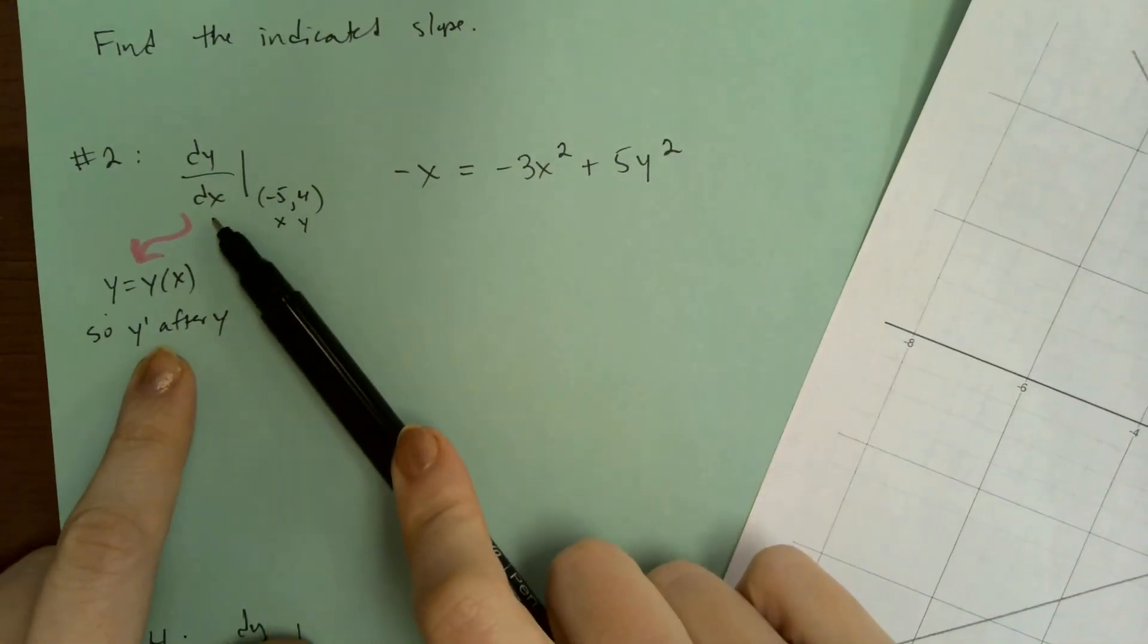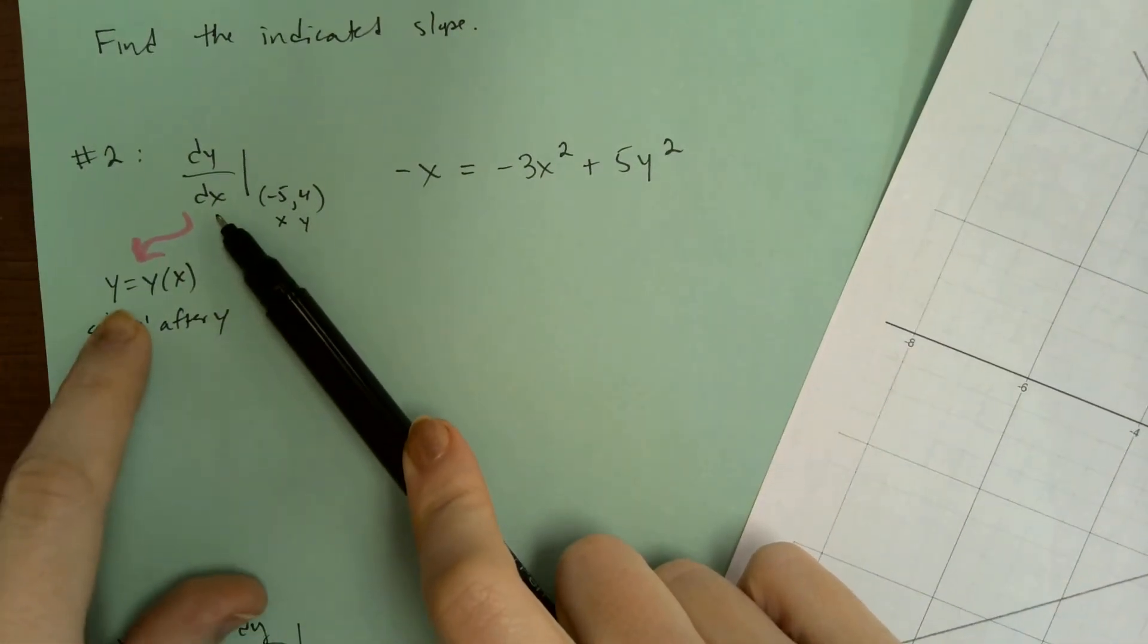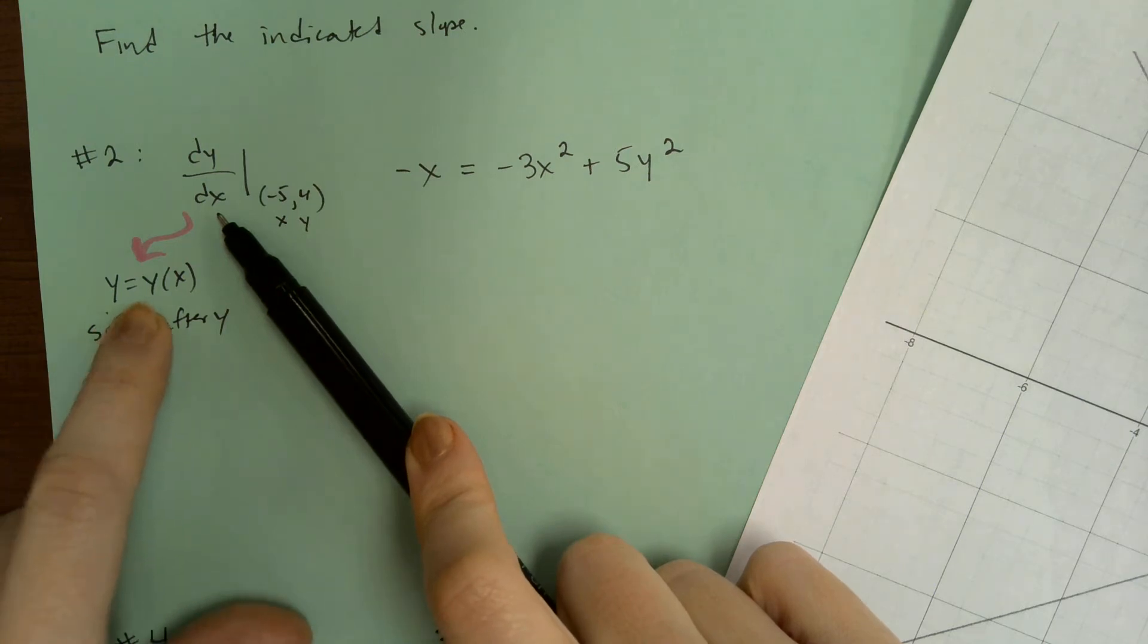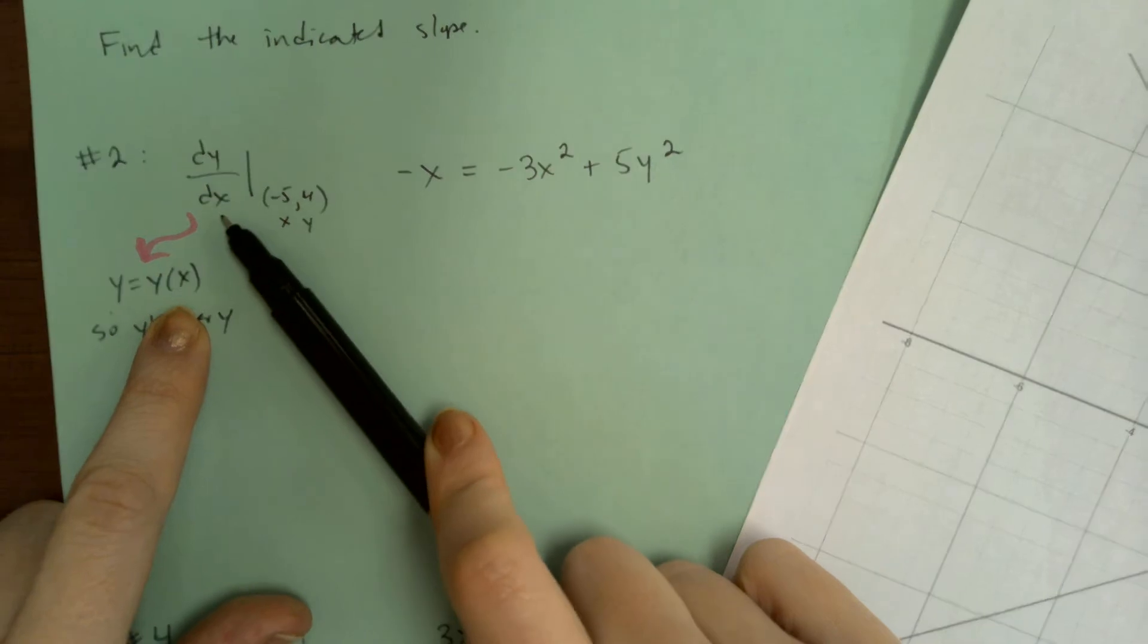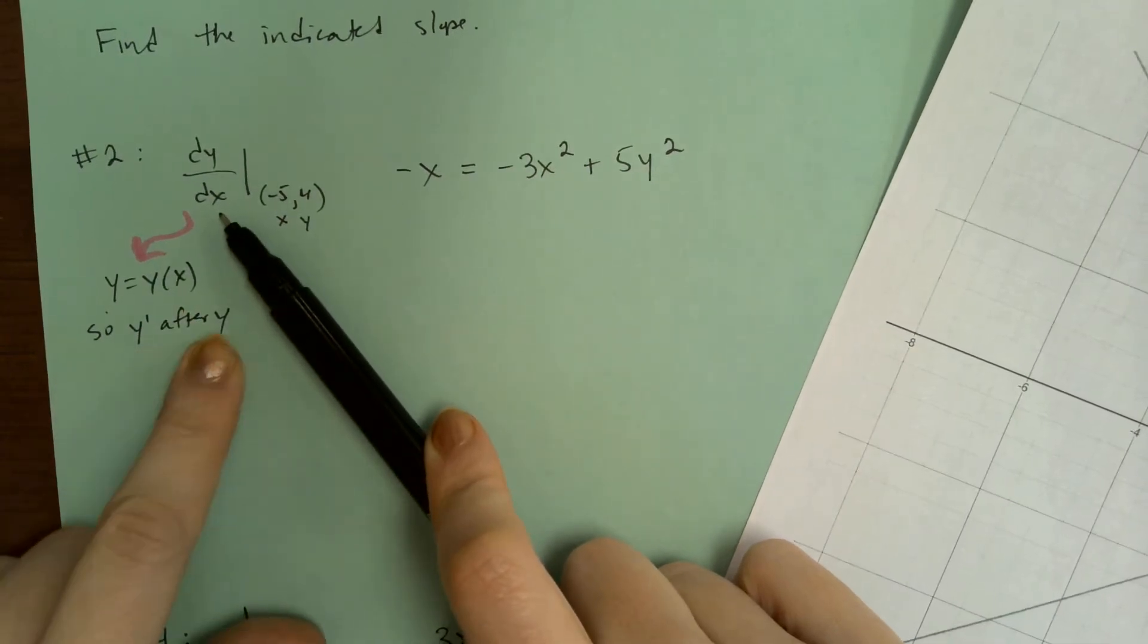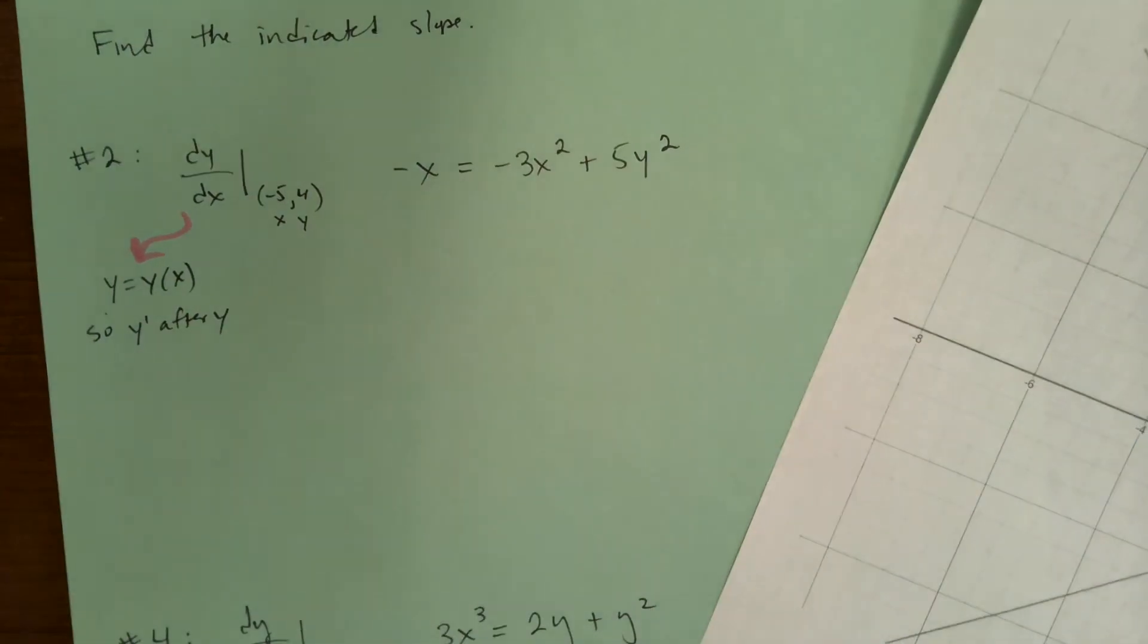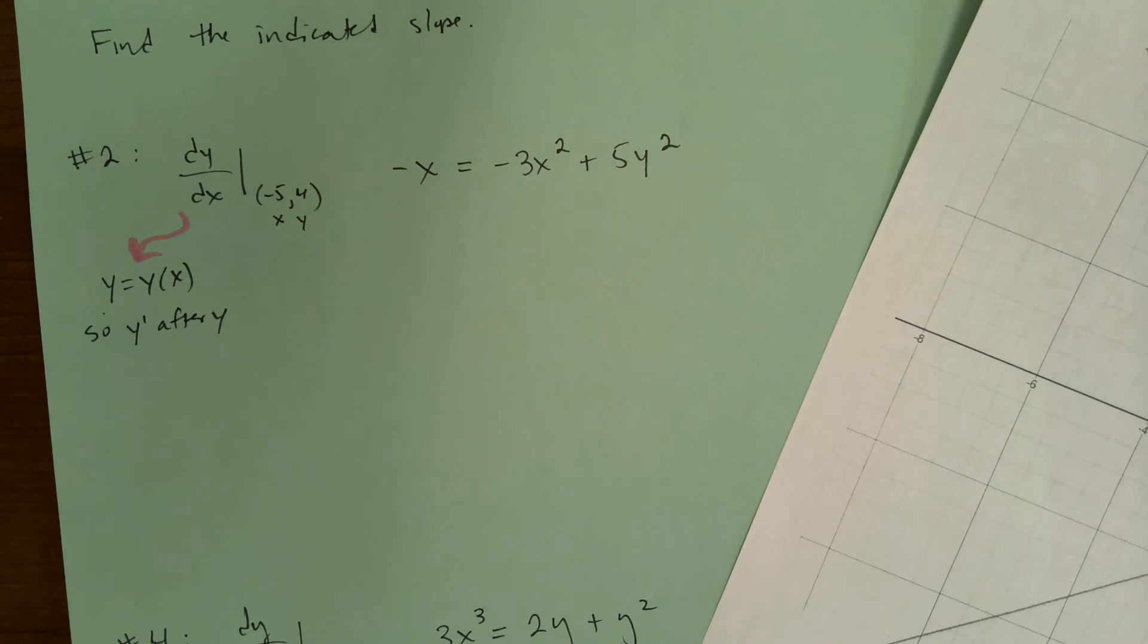Now because they're asking us to find dy/dx, they are implying that y is equal to y of x. So y depends on x. So x is the input, y is the output. So this means we need a y prime after a y, because we're actually going to do chain rule on the y derivatives and the y prime is the derivative of the inside.